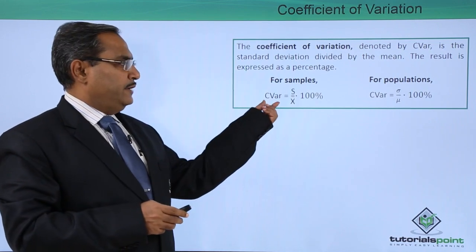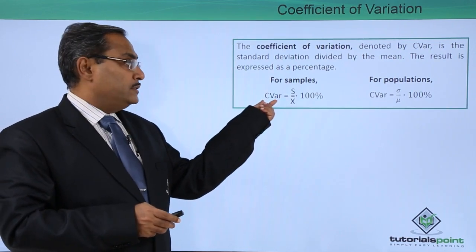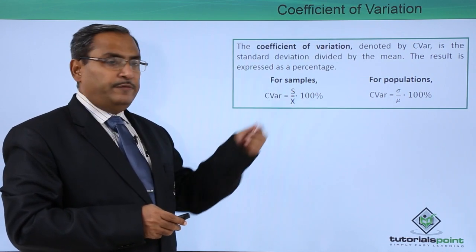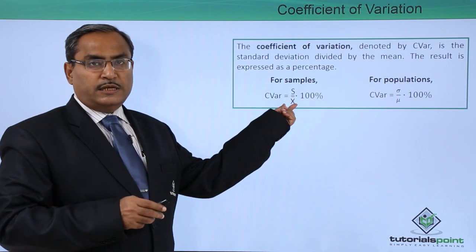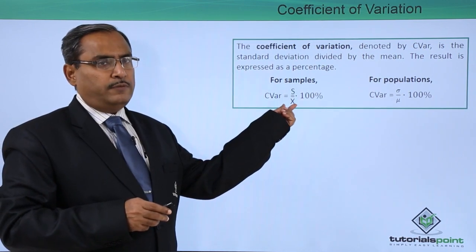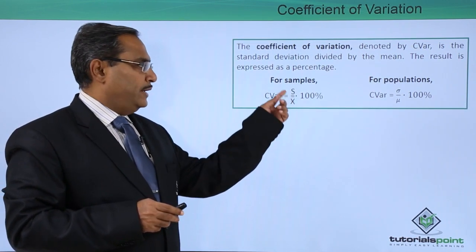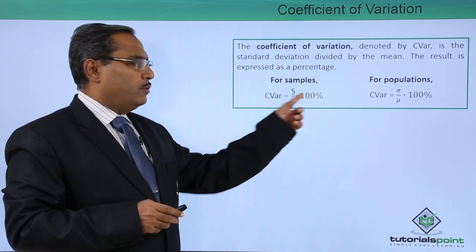So, if we calculate this CV for samples, the standard deviation will be expressed in the form of s and for the sample the respective mean will be expressed in form of x̄. So, s by x̄ times 100 percent.